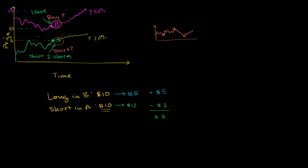So let's say in this negative scenario, B goes down by 20%. So down by 20%, it gets to $8 a share.